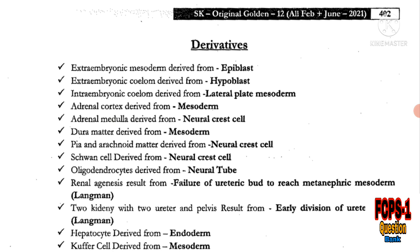MCQs regarding derivatives: extra-embryonic mesoderm is derived from epiblast, and extra-embryonic coelom is derived from hypoblast. Differentiate between these two — mesoderm is derived from epiblast, coelom is derived from hypoblast, and intra-embryonic coelom is derived from lateral plate mesoderm.